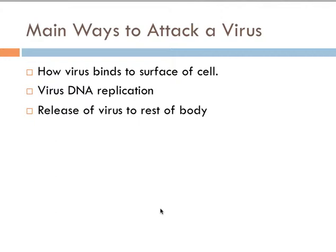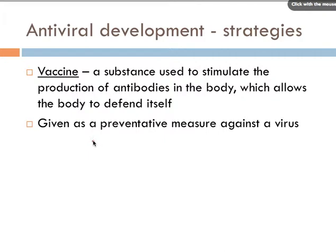The main ways to attack a virus are to attack the binding of that virus to the surface of the cell, attack how that DNA is replicated, or to affect the way the virus is released to the rest of the body. The IB tends to focus on these ways to attack a virus. There is another strategy, and that is to come up with a vaccine — a substance used to stimulate the production of antibodies in the body, allowing the body to defend itself. A vaccine is given as a preventative measure against a virus.